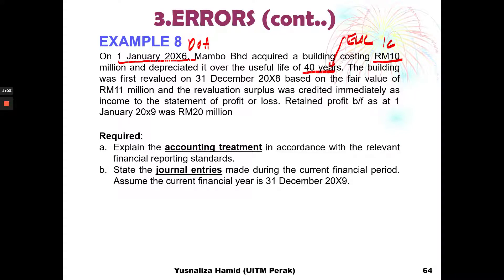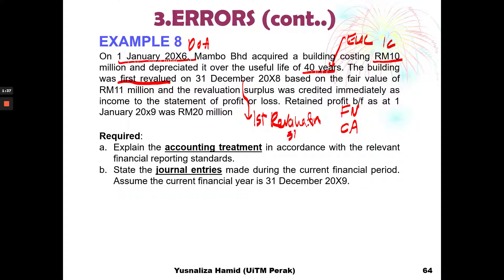The building was first revalued on 31st of December — that is the first revaluation. Please recall the accounting treatment for the first revaluation. There is a surplus where the fair value is 11 million, which is compared with the carrying amount on the first revaluation date, 31st of December X8.